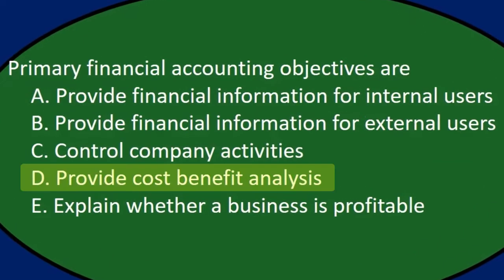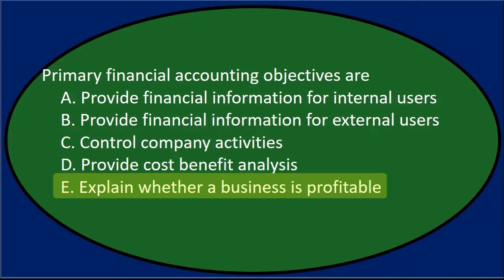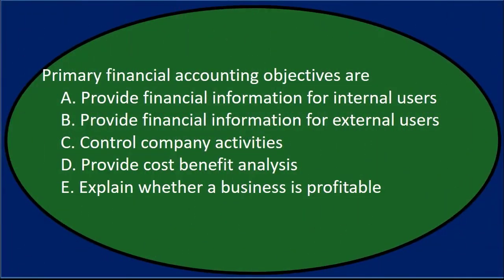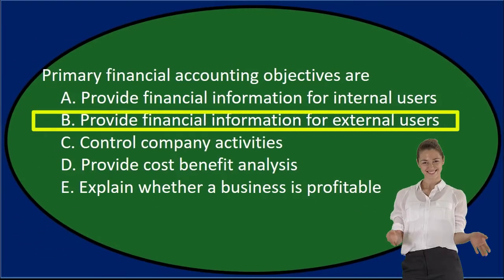The financial accounting is really geared towards putting that information together in a standardized and regulated format for external users. C — control company activities — is not the primary objective; that would be something done by management. D — provide cost-benefit analysis — would be something internal users do. E — explain whether a business is profitable — might be a use, but the primary objective is for external users' information. So the answer is: provide financial information for external users.